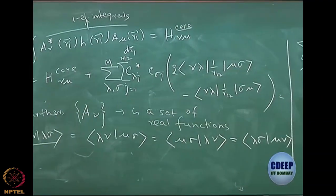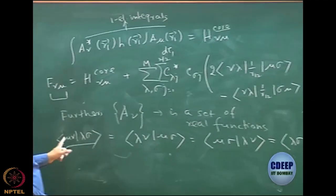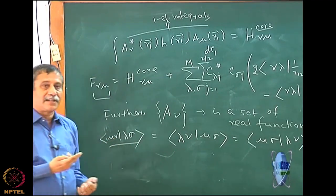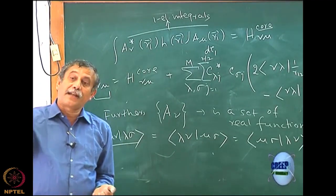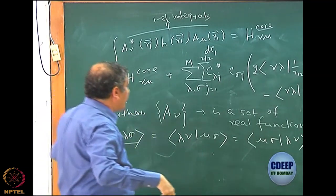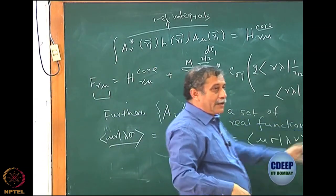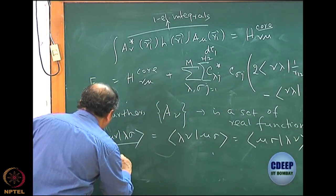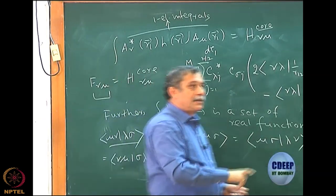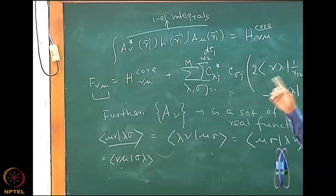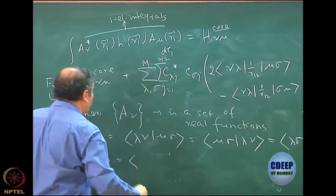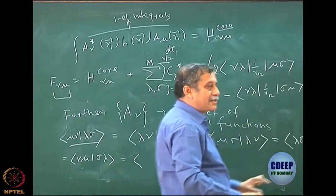Then I can do another interesting thing. Because 1 and 2 are dummy indices, I can independently interchange 1 and 2 on both sides. And that could be done even if they are complex — remember, the previous ones are only for real. But even if it is complex, I could write this as (nu mu | sigma lambda), because that will only change dummy variables 1 and 2. I hope all of you are understanding.